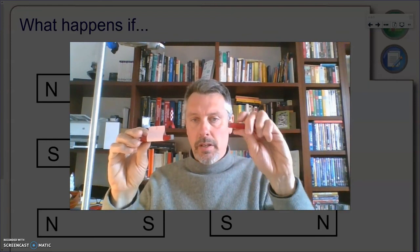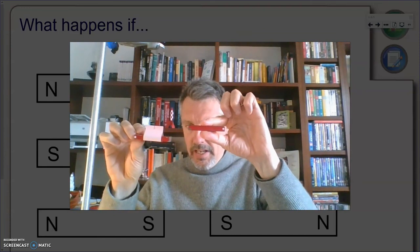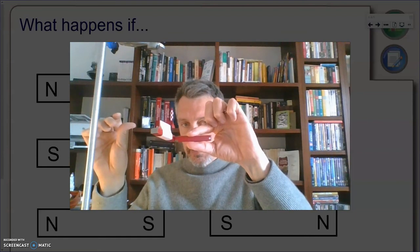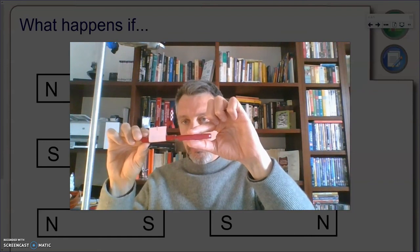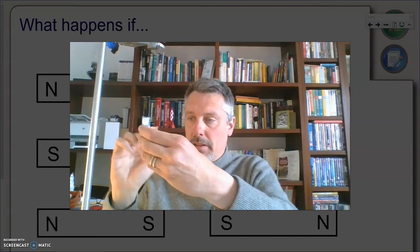And we can do the same with two south poles. Now we have two south poles, and you can see it because of a white dot. And let's see. Oh, it spun again. And again, we have the two opposite poles attaching together.